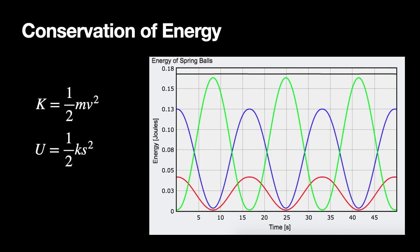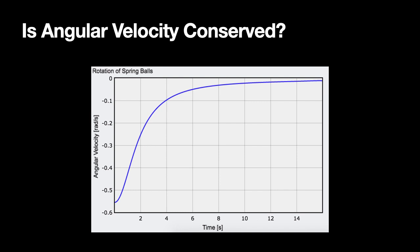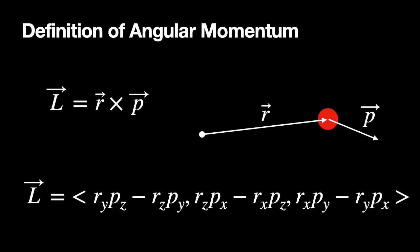What about another quantity that doesn't change with time? If I plot the angular velocity of the rotating balls as a function of time — the change in angular position divided by the change in time — as they move further and further apart, the angular velocity decreases. So angular velocity is not conserved. The same is true for linear velocity: linear velocity was not conserved, but momentum was. So now we're going to define a new quantity: angular momentum.